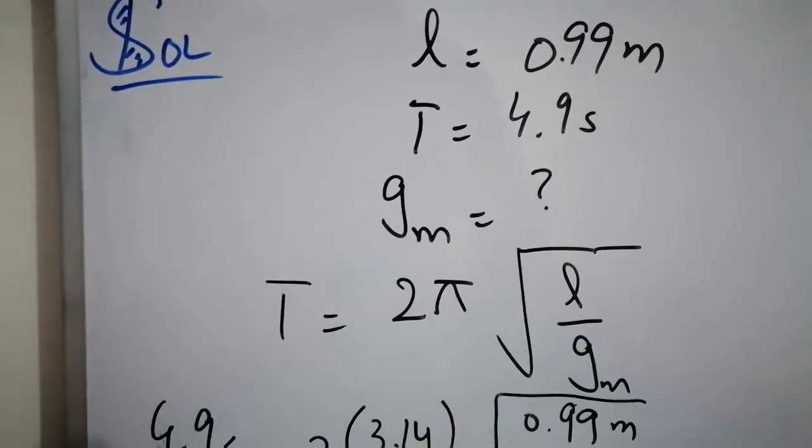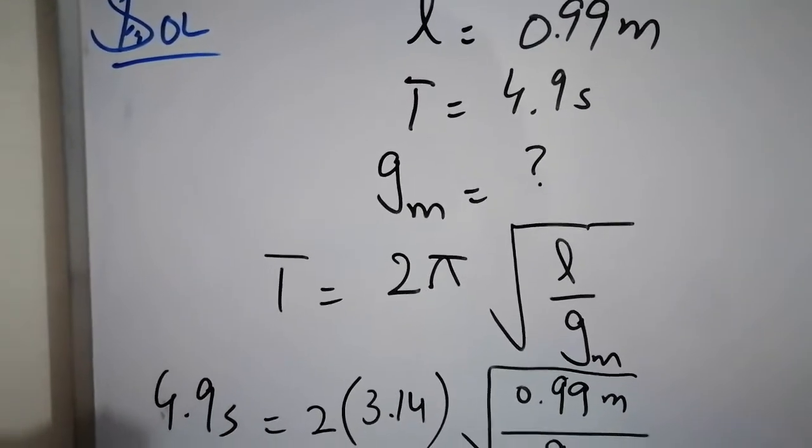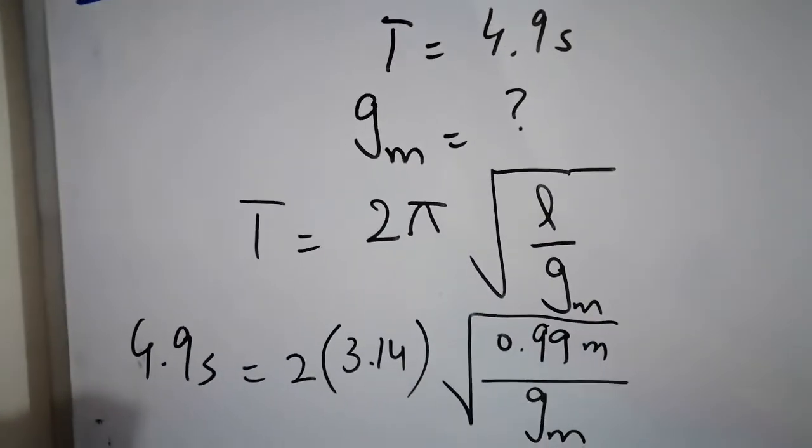For T, we have 4.9 seconds given. We have to substitute it. The value of pi is 3.142. The length value was 0.99 meters. And we have to find gravity of the moon.